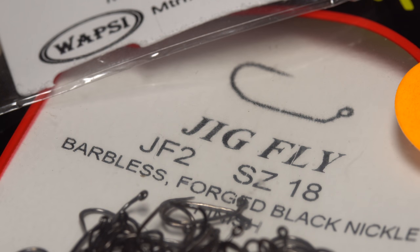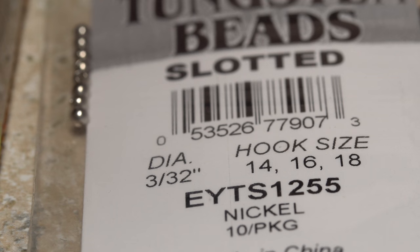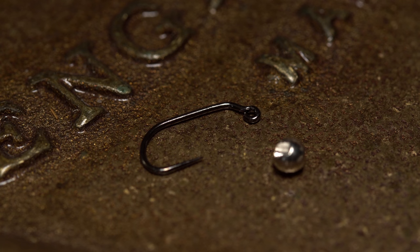For a hook, I'm going to use a Lightning Strike JF2 jig hook in size 18. A 3.32 of an inch, nickel-colored slotted tungsten bead is a good match for the hook. Both the hook and the bead are quite small, and handling them can be tricky.